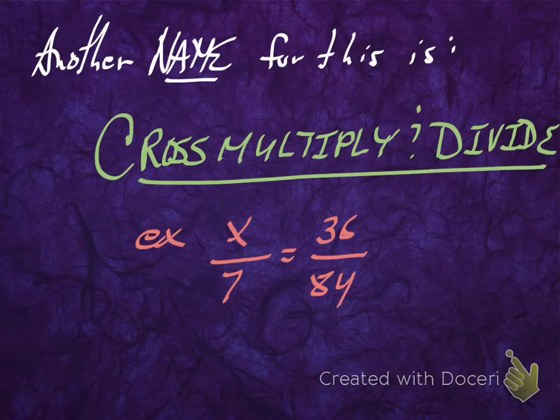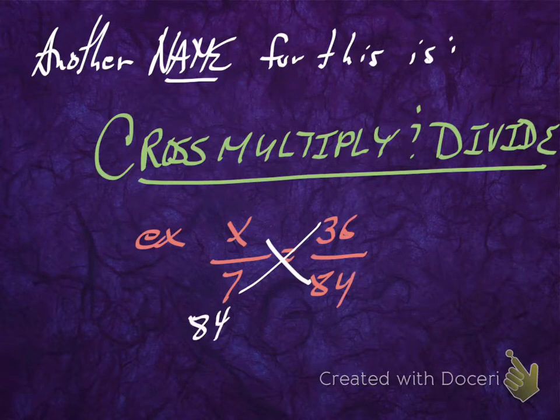Another name for this is cross-multiply and divide. And so again, what we're going to do is we're going to multiply the 84 times the x and the 36 times the 7.